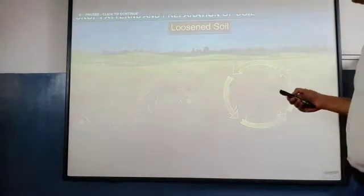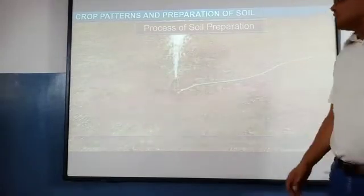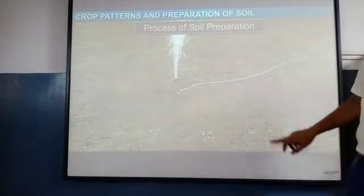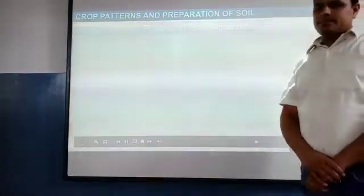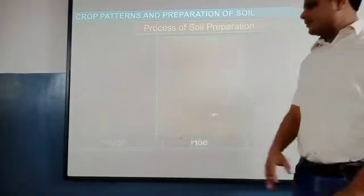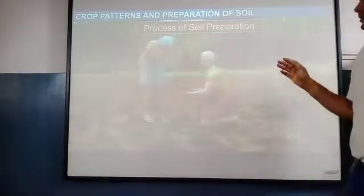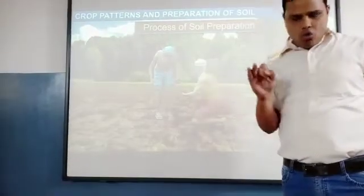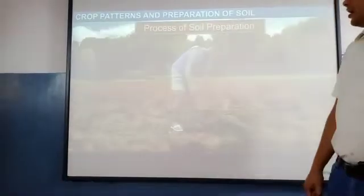Loosening can only be achieved by plowing. There are three processes of soil preparation: first, the plow; second, the hoe; and third, the cultivator. With these tools we can plow the field.